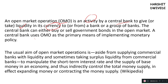The central bank does this by either selling or purchasing government bonds, also called government securities, treasury securities, or treasury bonds. Either the central bank sells these in the open market or purchases them from the open market.